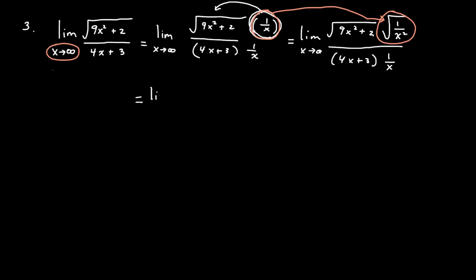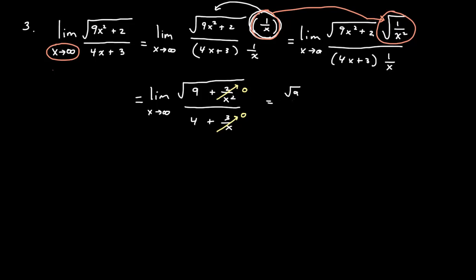This equals the limit as x approaches infinity. I can distribute the radical into a radical, giving the square root of nine plus two over x squared, all over four plus three over x. The limit of two over x squared equals zero and the limit of three over x equals zero. So in the end, this results in the square root of nine over four, or simply three-fourths.